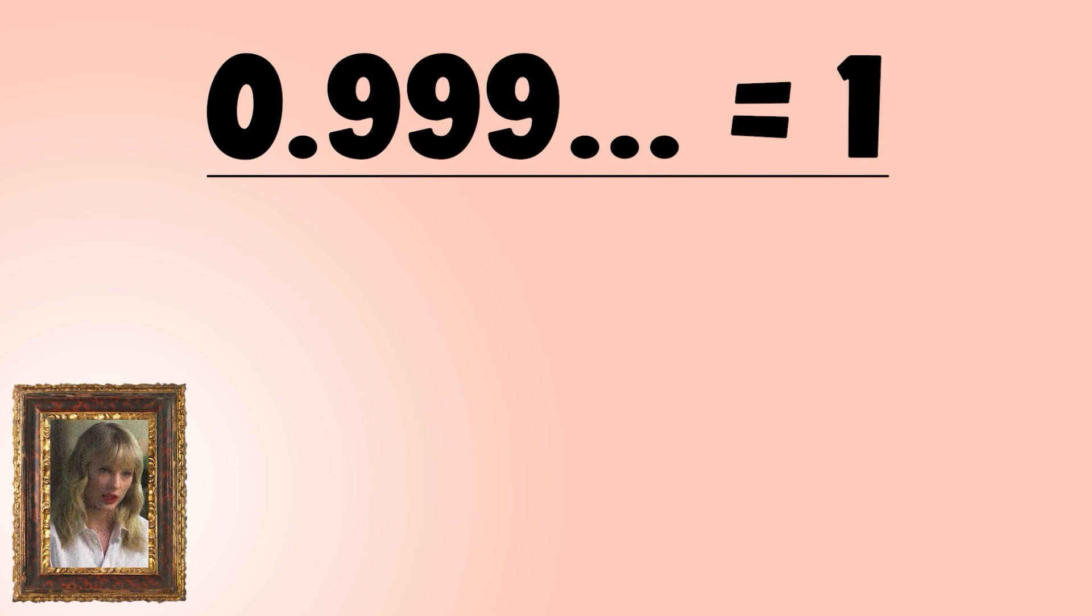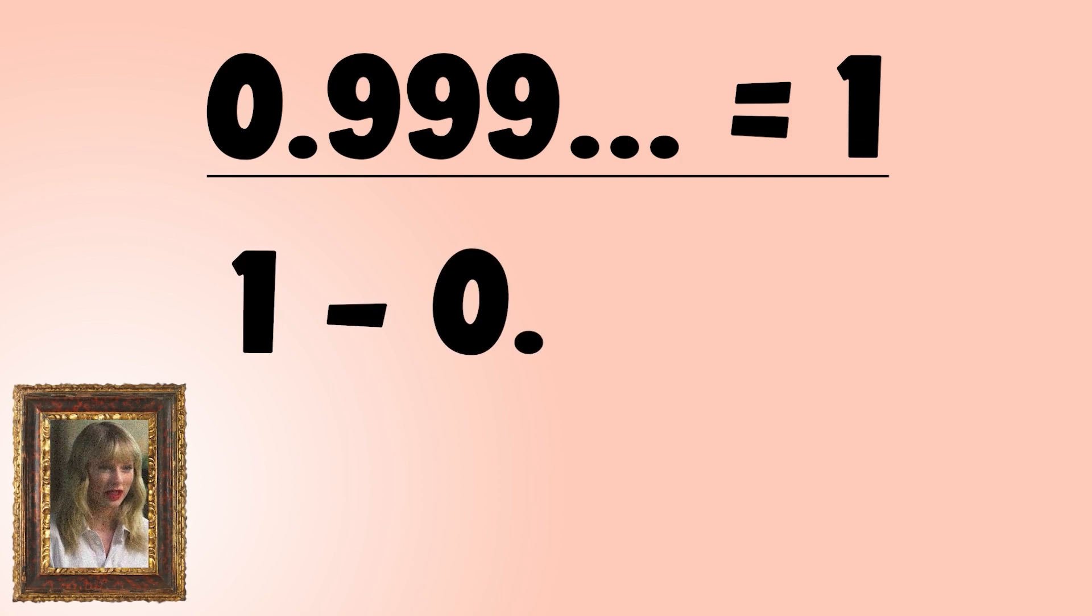For example, did you know that 0.9 repeating equals one? And I'm not talking about being approximately equal, I mean exactly the same, as in there is no difference. In other words, I am claiming that one minus 0.9 repeating equals zero.